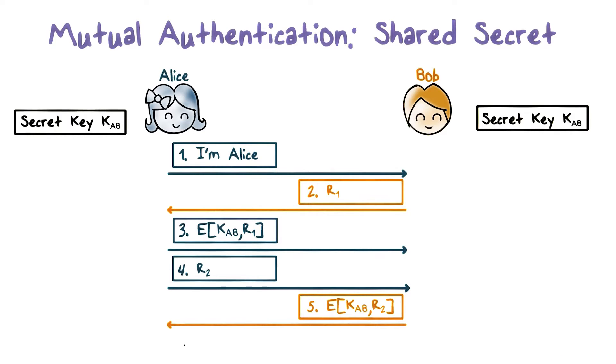Upon receiving the response from Bob, Alice decrypts the ciphertext. And if the result matches the plaintext R2 that she just sent to Bob, then she knows that the party she's communicating with must be Bob.